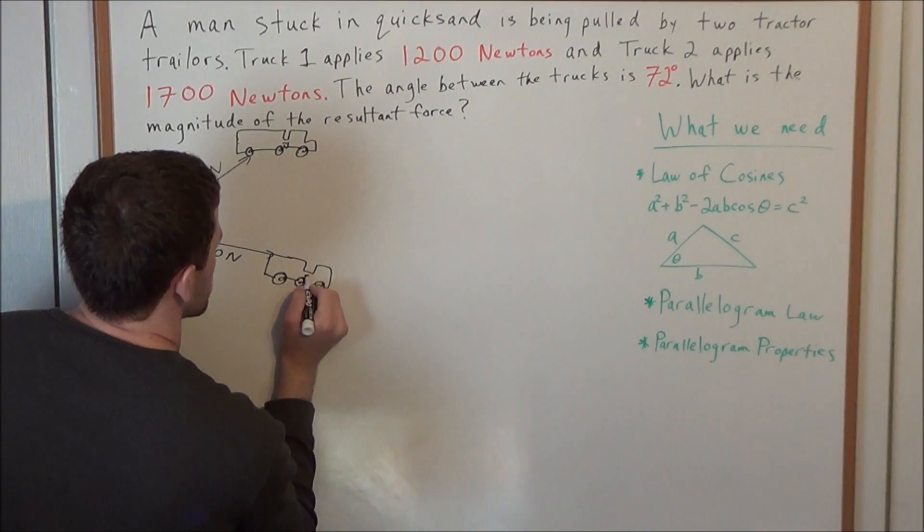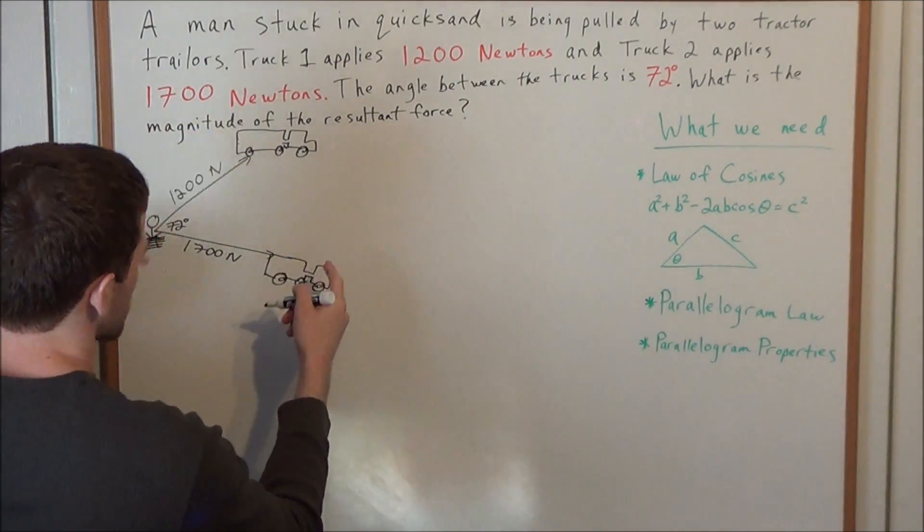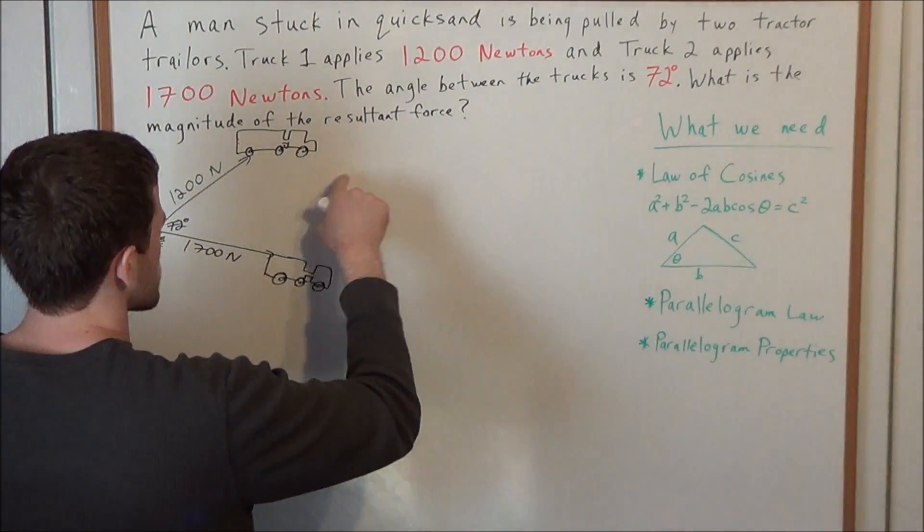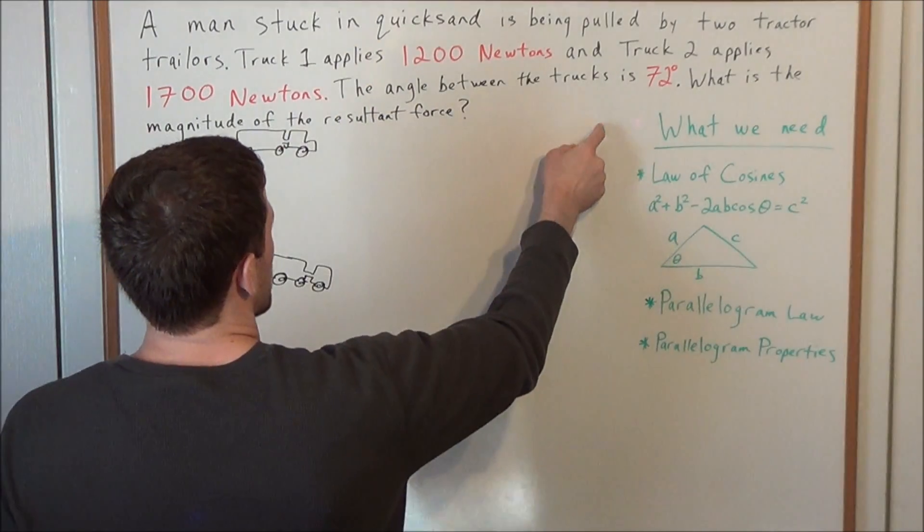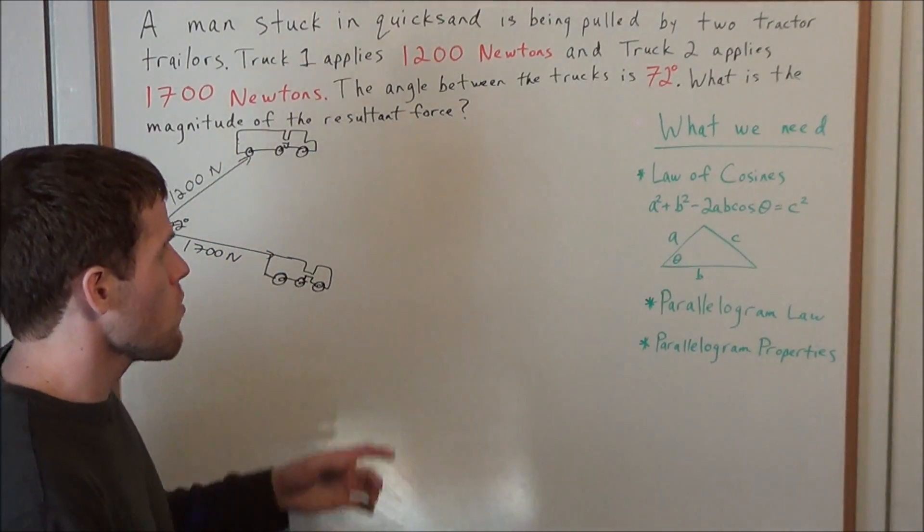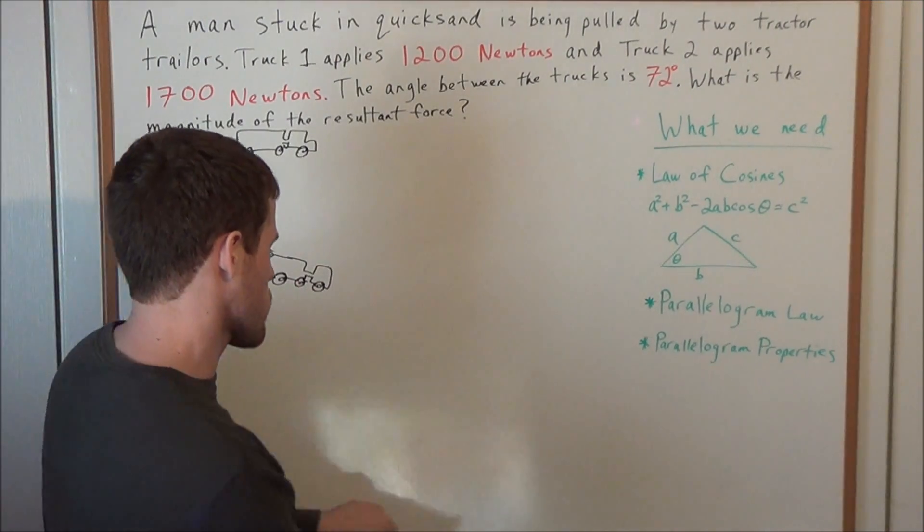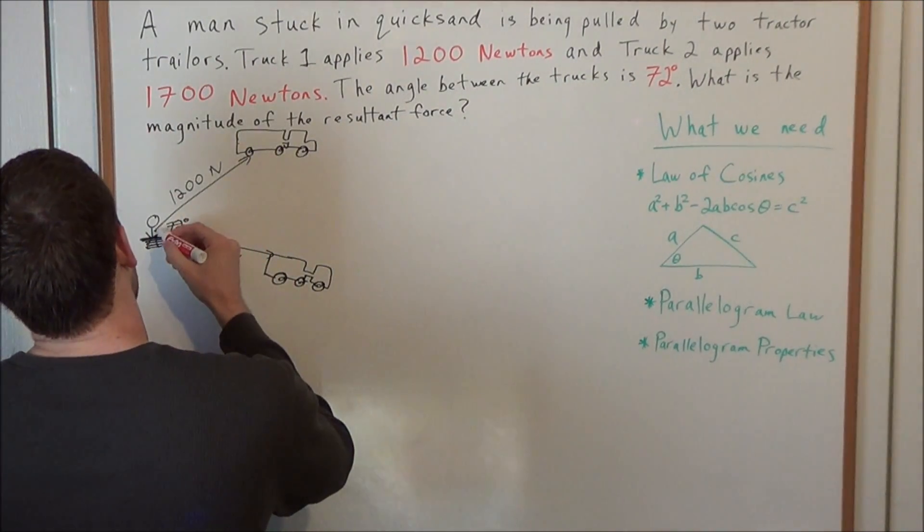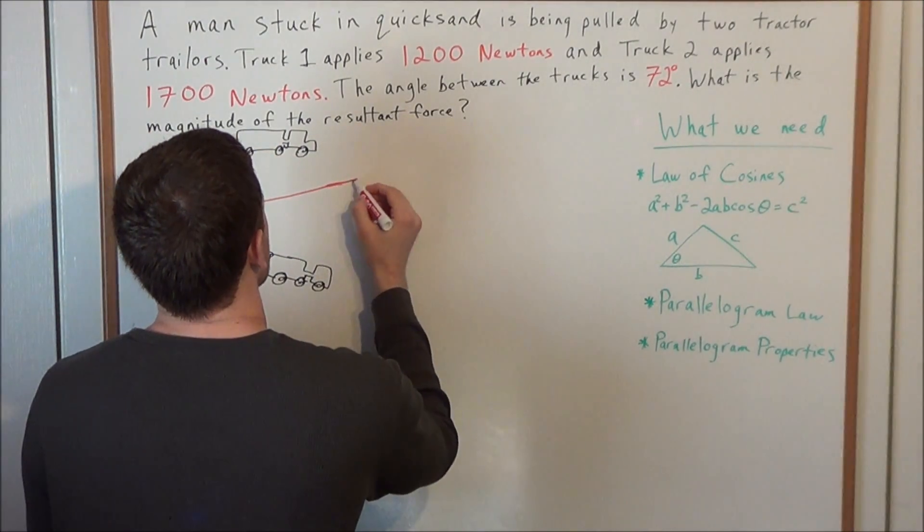So now, we're trying to find the resultant force, which intuition allows us to see that this resultant force will be going in this direction here. But what are we going to need to solve this problem? We're going to need the law of cosines to find this missing or this resultant force. The law of cosines is going to tell us the magnitude of this resultant force here.